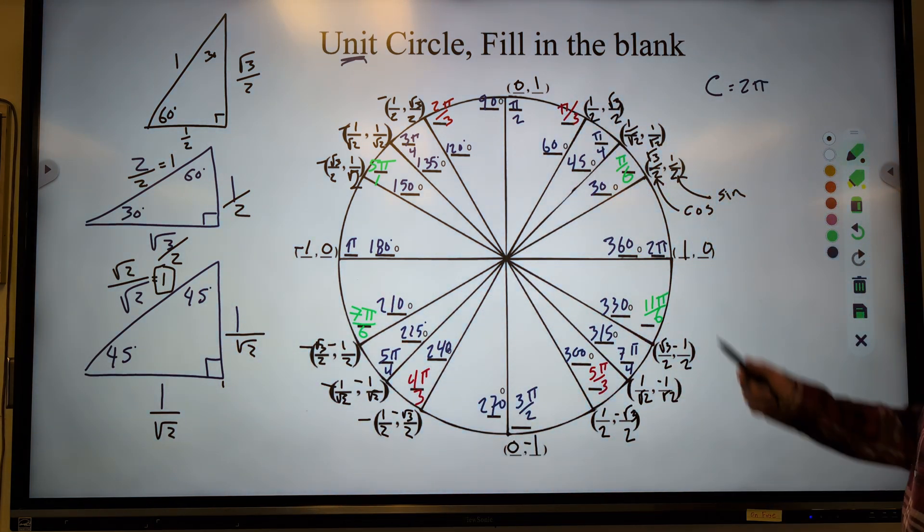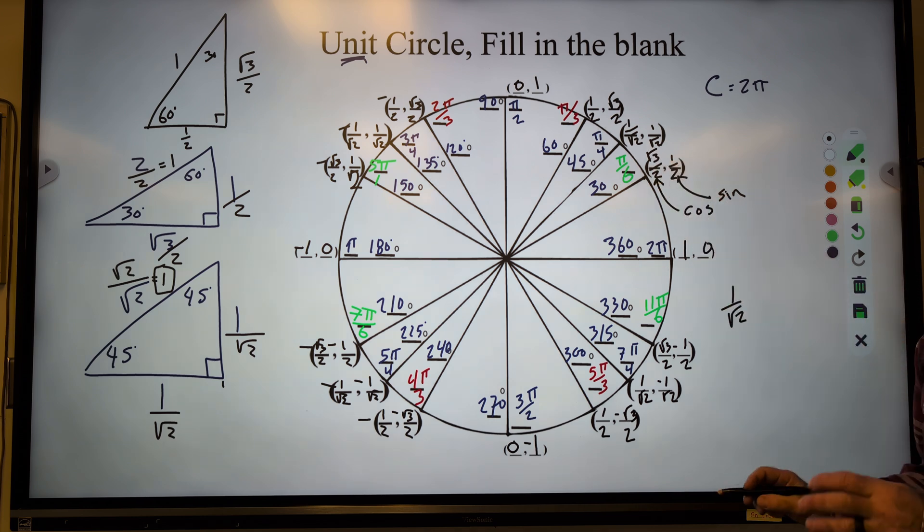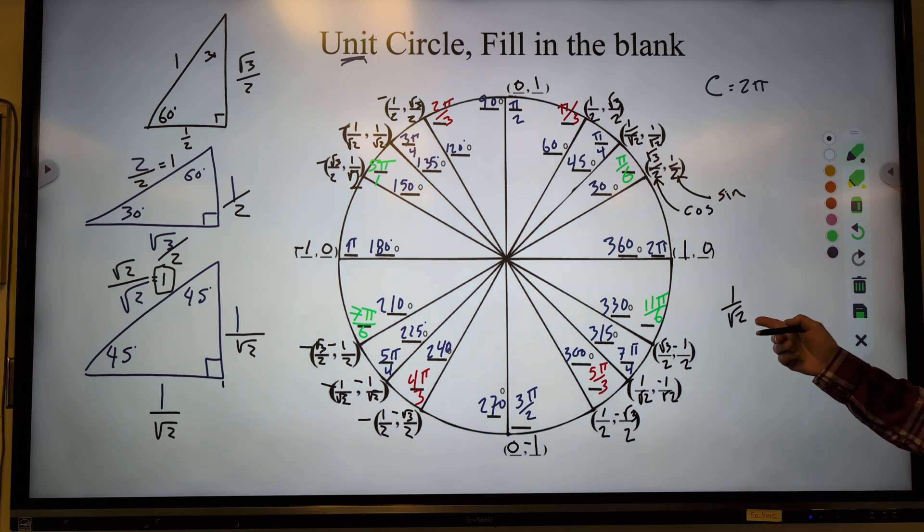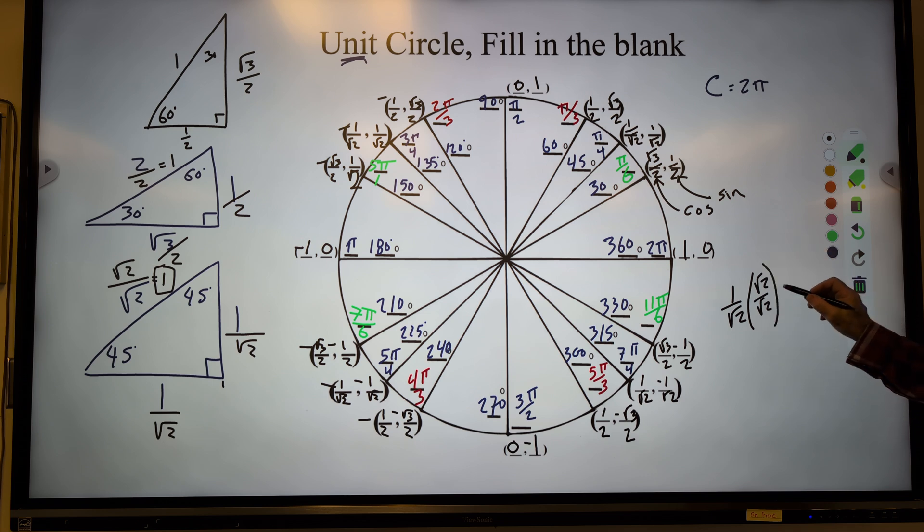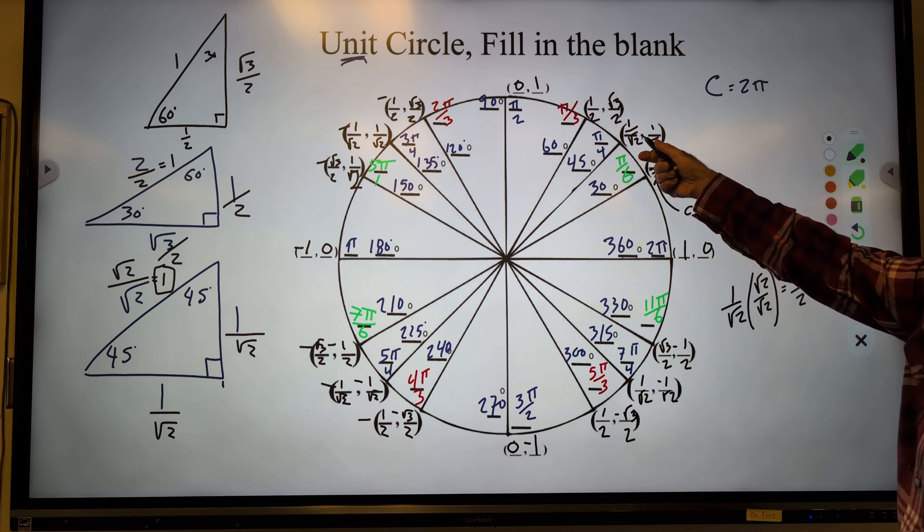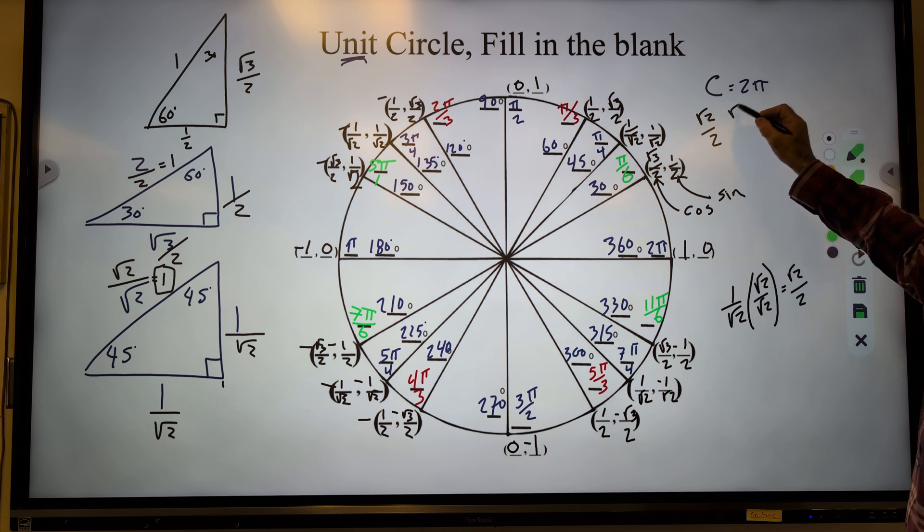I just have one last little point. One over root 2 on our 45s. A lot of the times, you rationalize the denominator. So get rid of the square root in the bottom. To do that, you can multiply by 1. It doesn't affect the value. And it will give you root 2 over root 4, which is equivalent to 2. So a lot of times, you'll see these written as root 2 over 2. But root 2 over 2 is the same thing as 1 over root 2.